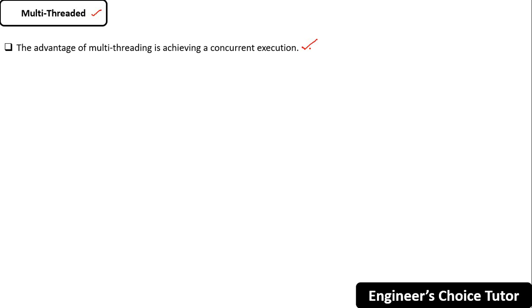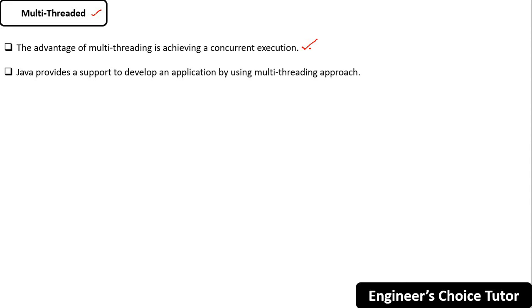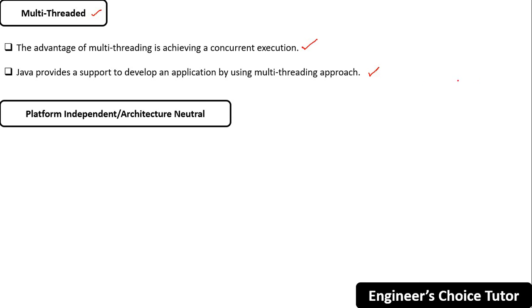Performing multiple tasks at the same time improves performance. Java provides support to develop applications using a multi-threading approach, which is why Java is called a multi-threaded language.